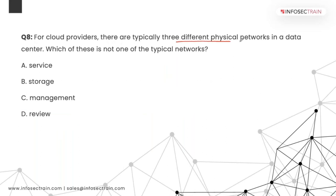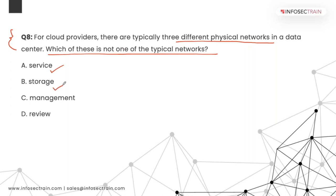Question 8: For a cloud provider, there are typically three different physical networks. Which of these is not one of the typical networks? The answer is the review network — there is actually no review network in any cloud data center. The three typical networks are: one for storage (getting and storing data), one for communication between services, and one for the management portal connecting back-end services to management.